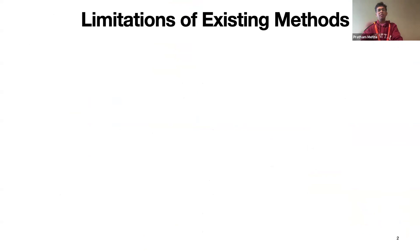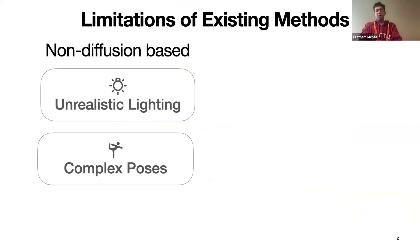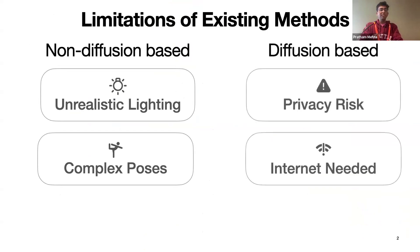Virtual try-on has been a popular topic of research with plenty of applications, and we've seen two overarching approaches. The first are the classic non-diffusion-based methods such as warping modules, which often fail to simulate realistic lighting conditions such as shadows and wrinkles, and often struggle with common deformation when dealing with complex body poses. Recent research exploring diffusion models has been very promising, but these run on the cloud due to high computational and storage demand, which poses privacy risks as users upload their private body image data. It also requires a strong internet connection to send, upload, and receive these images.